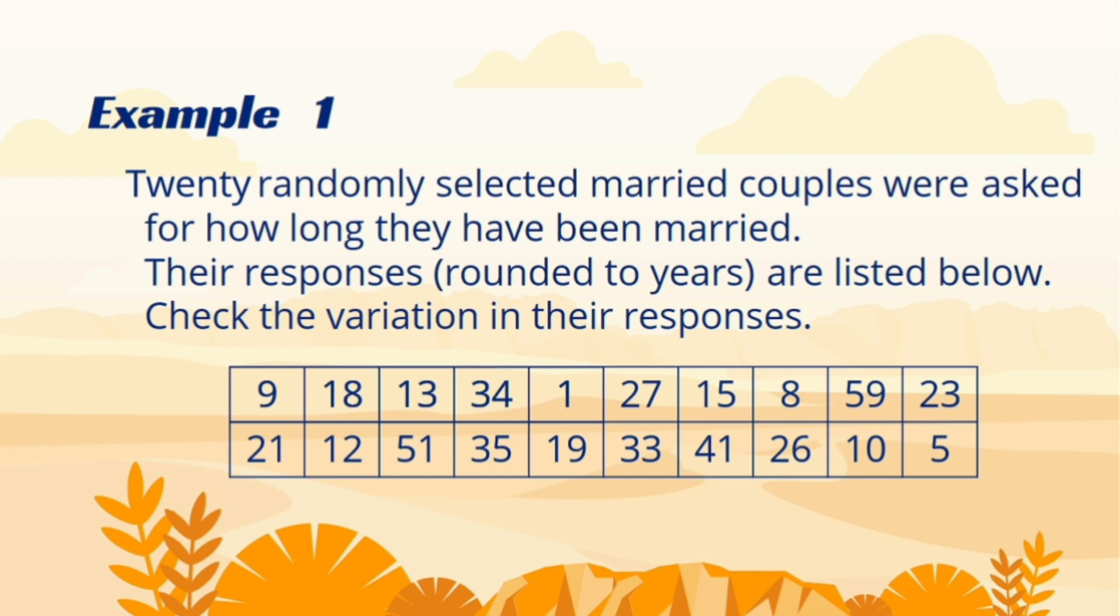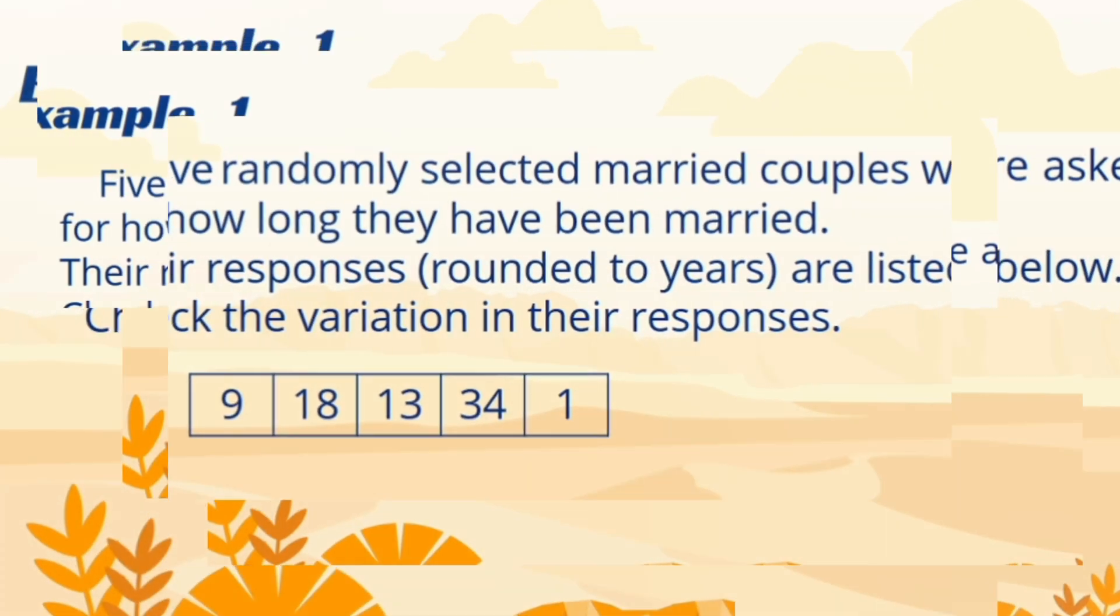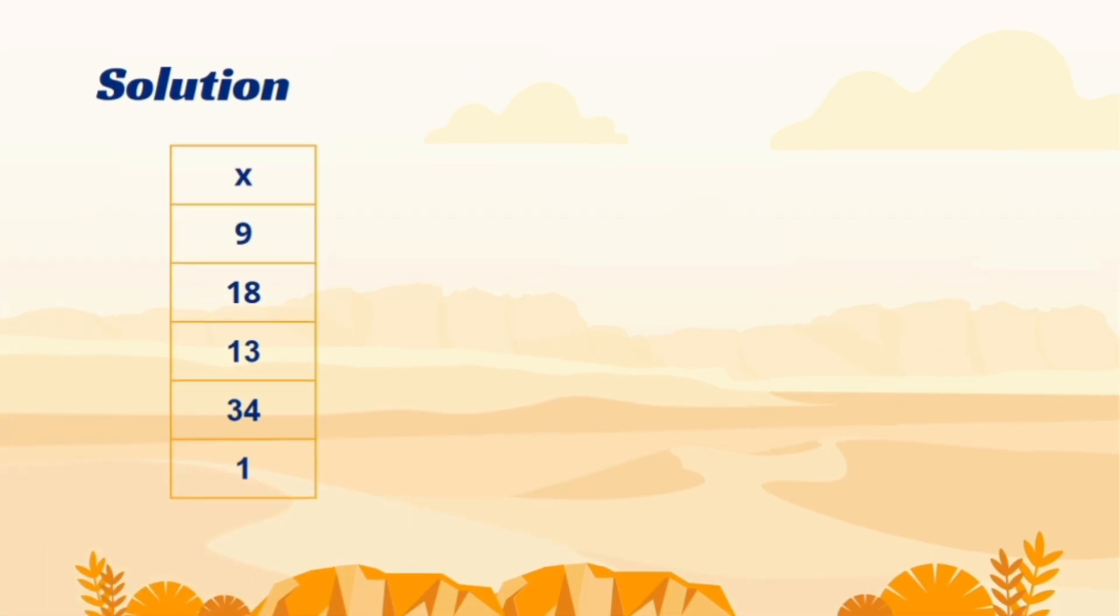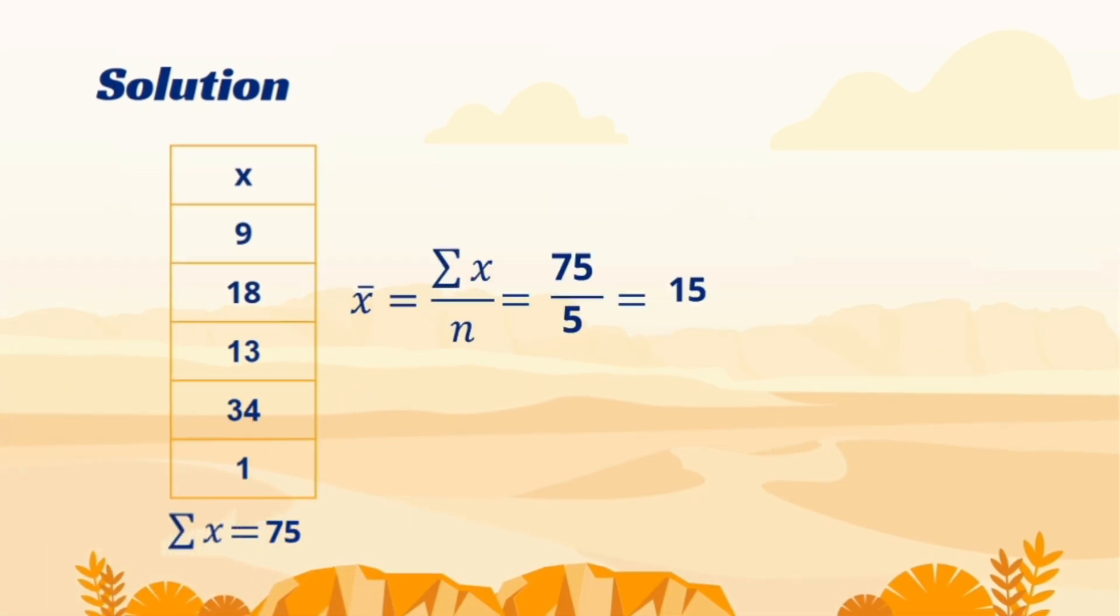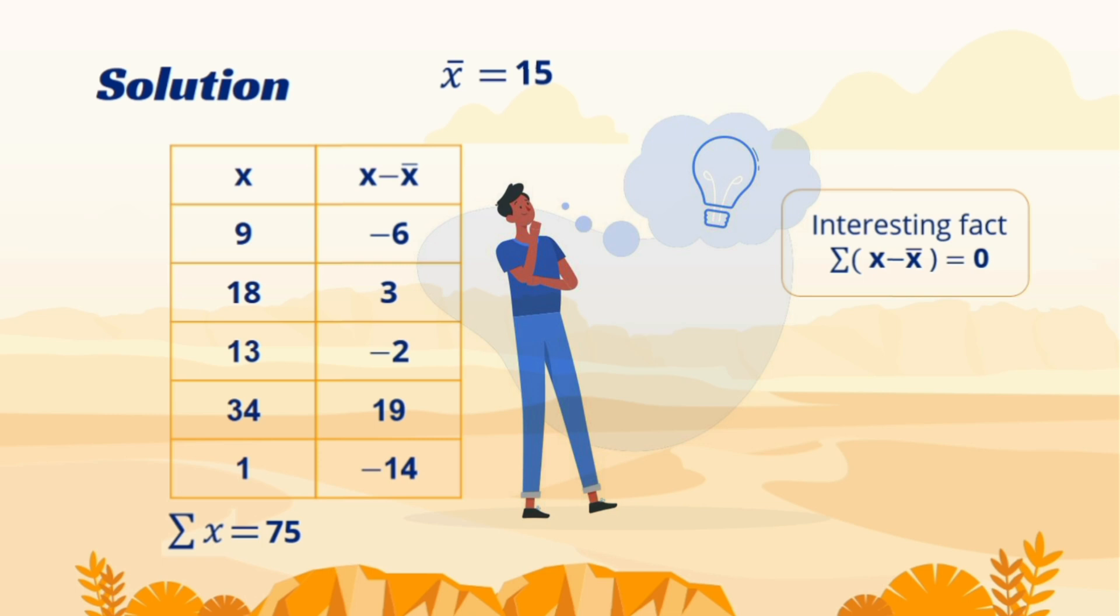We again use the first example about married couples, but instead of calculating the average, now we find the variation in their responses. And because of limited space, I reduced the observations to only 5 responses. It is an ungrouped data. To calculate the variation, we first find the average that is 15. Now we make another column to find the difference between each observation and their mean. One of the hints here, if you add this column and result is 0, then your calculations are on right way. That is because it is a property of mean.